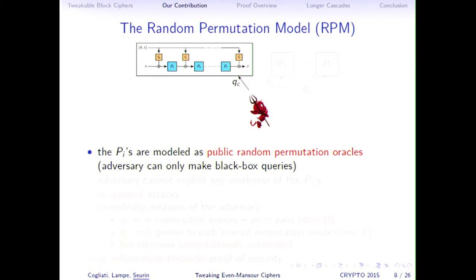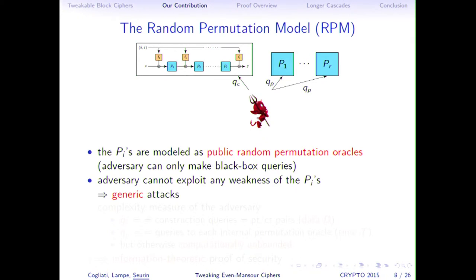A word about the random permutation model: analyzing a construction in this model means the adversary has black-box access to the construction as always in a security experiment, but also has black-box access to the internal permutations, which are modeled as public random permutation oracles. The adversary can only make black-box queries to the internal permutations. So we are only giving security proofs against generic attacks — attacks that don't use any specific details about the internal permutations.